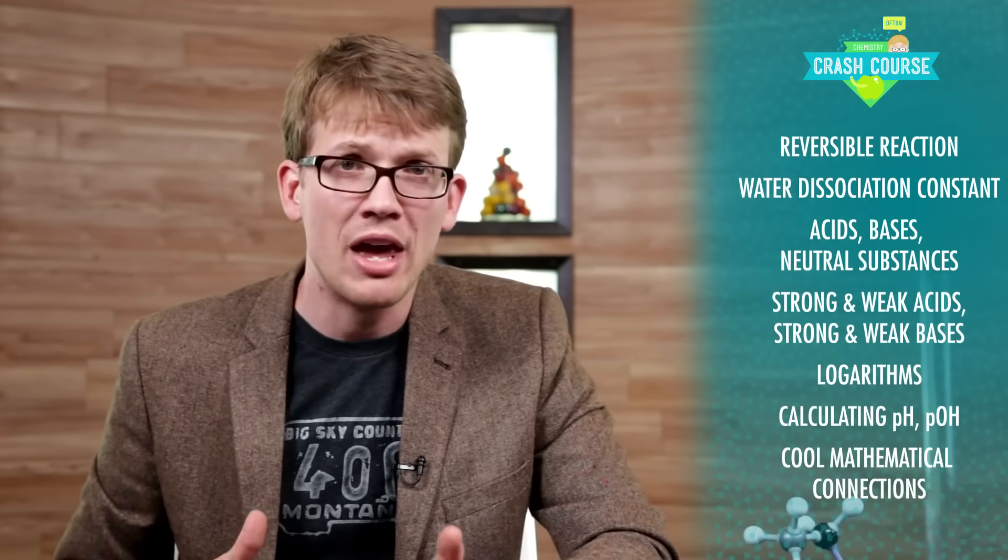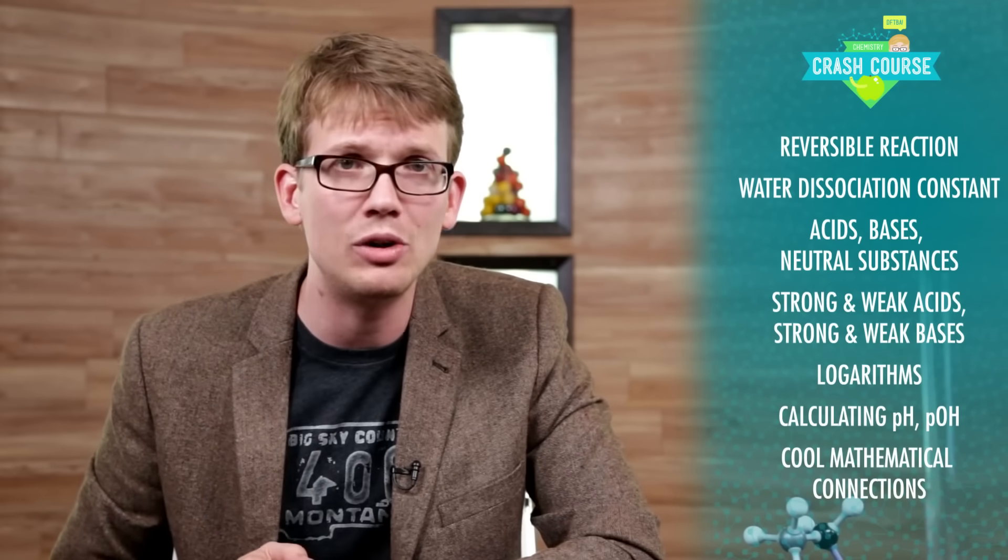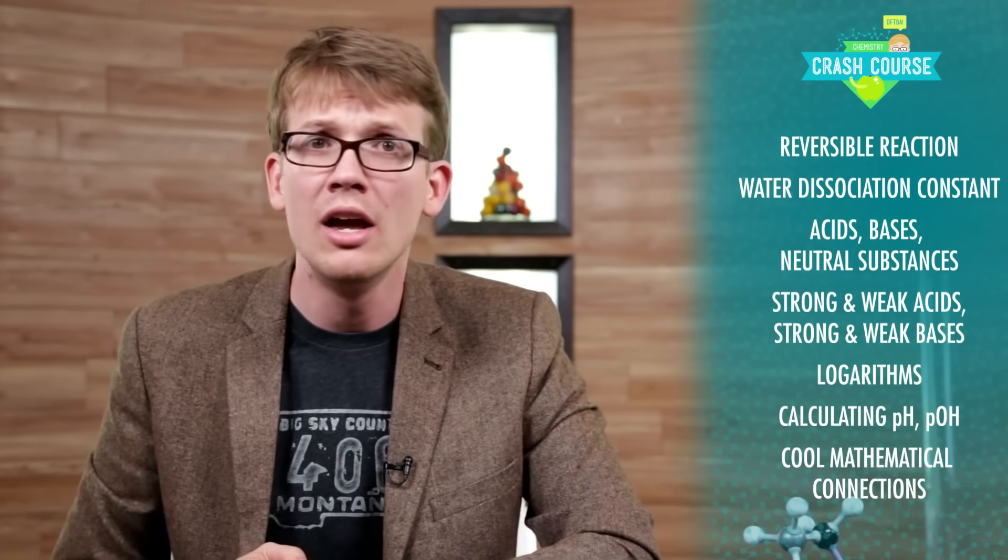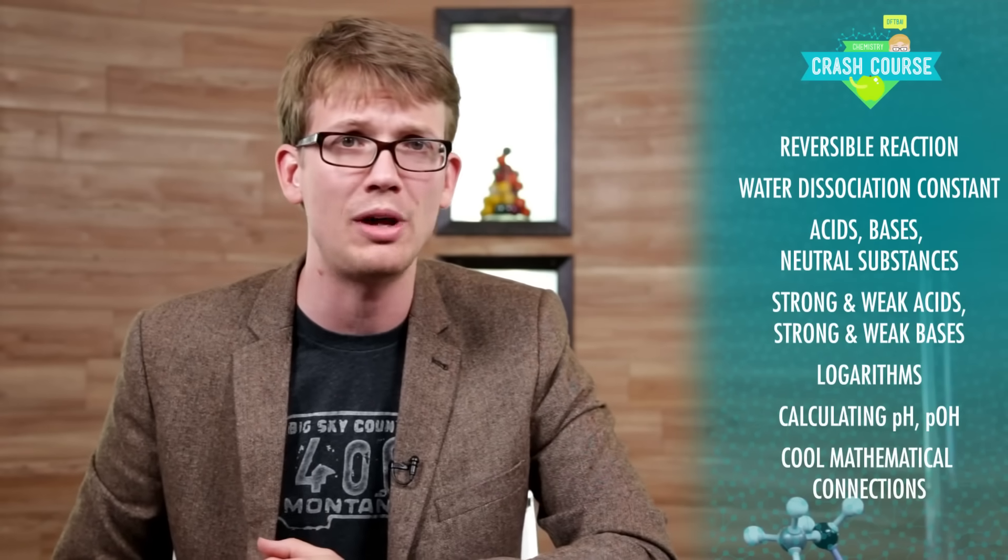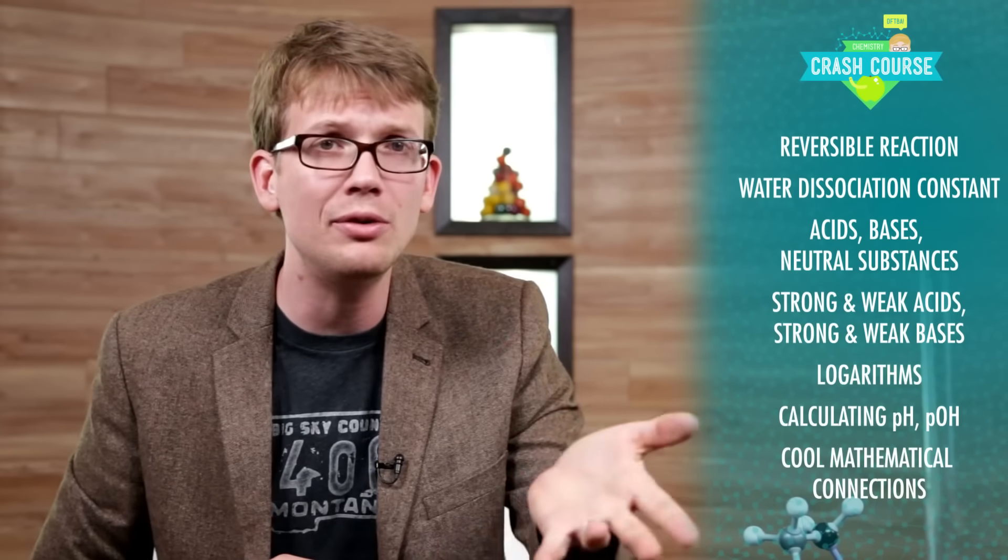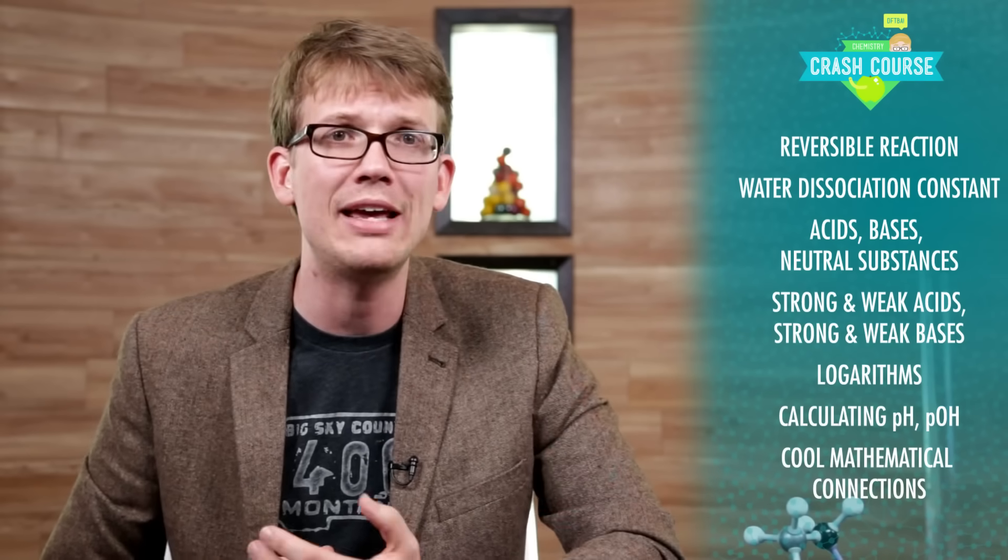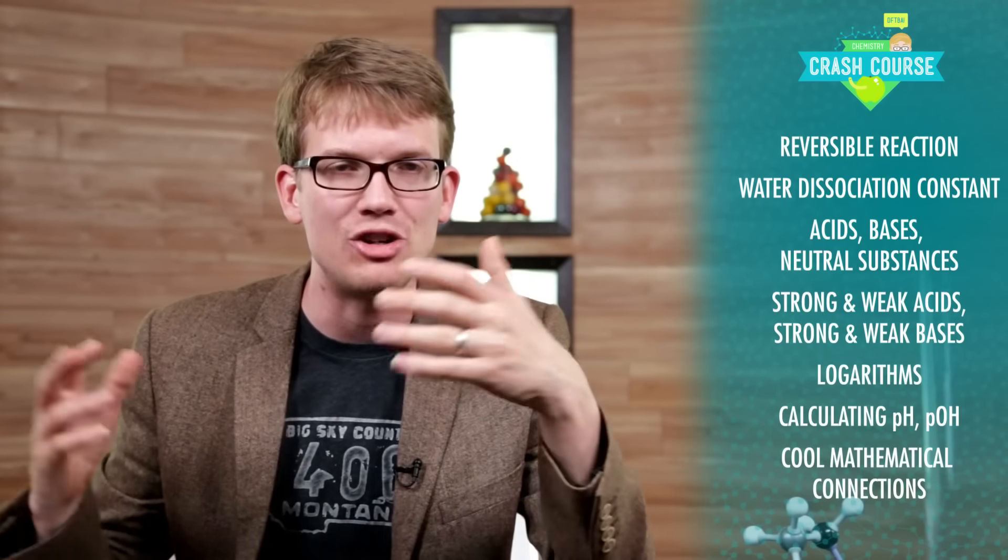And next week I hope to really bend your mind by showing you how to make the pH of the solution hold steady even if you dump a strong acid or base in it. In the meantime, thank you for watching this episode of Crash Course Chemistry. If you paid attention, you learned how pure water ionizes to form hydronium and hydroxide ions in reversible reactions, and you learned about the equilibrium constant for that reaction, which has a special name, the water dissociation constant. You learned some examples of acids and bases and neutral substances, as well as why some acids and bases are called strong and others are called weak. You learned about logarithms and how you can use them to calculate the pH of a substance, and a little bit about pOH, which can be calculated with logarithms, also with subtraction. And finally, you learned about some cool mathematical connections between pH and pOH.